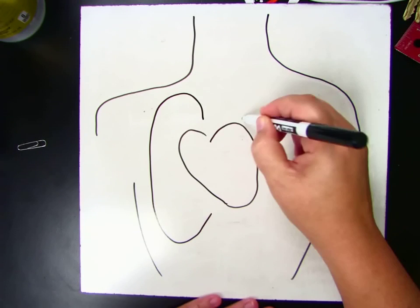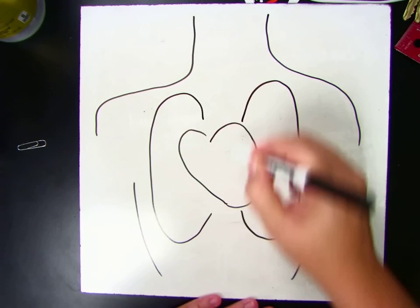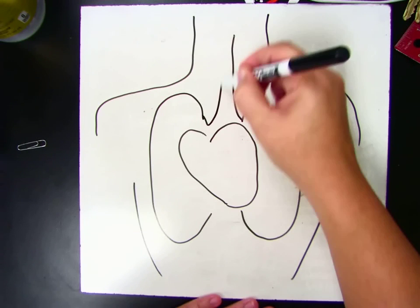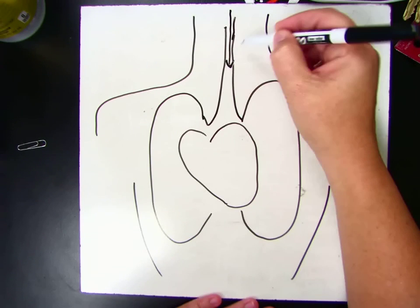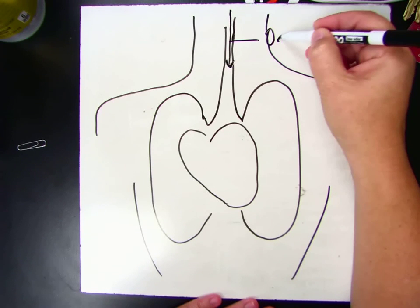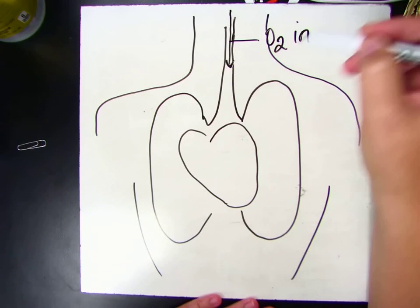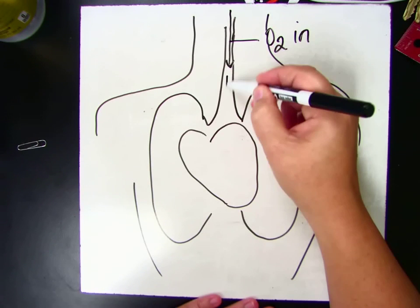So here's our heart, here's our lungs, and here's our trachea, that's the windpipe, that's where the air comes in. So we have oxygen coming in, and the oxygen travels into the lungs.